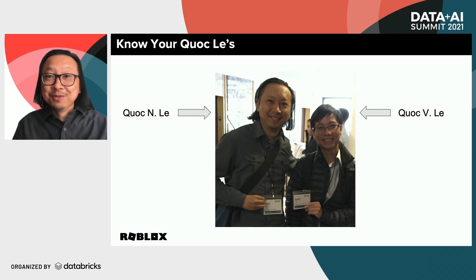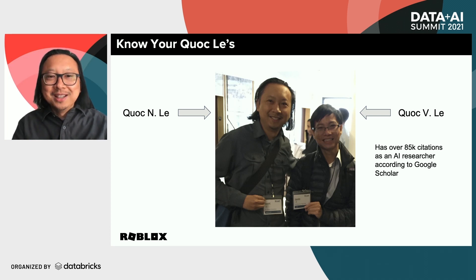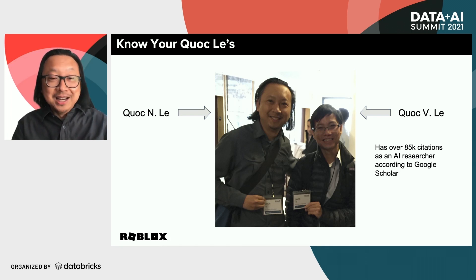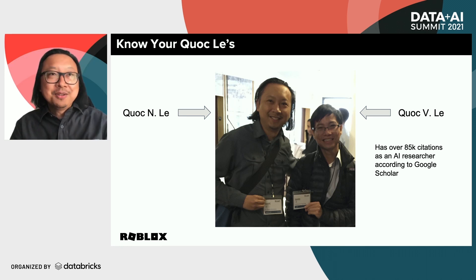You can see we have two different middle names too. I don't need to tell you that Kwok V. Lee is quite well known. In fact, you might know him as a deep learning researcher who has over 85,000 citations according to Google Scholar.